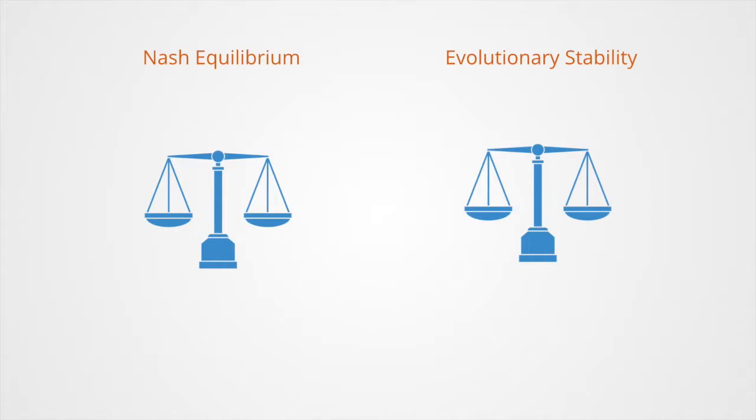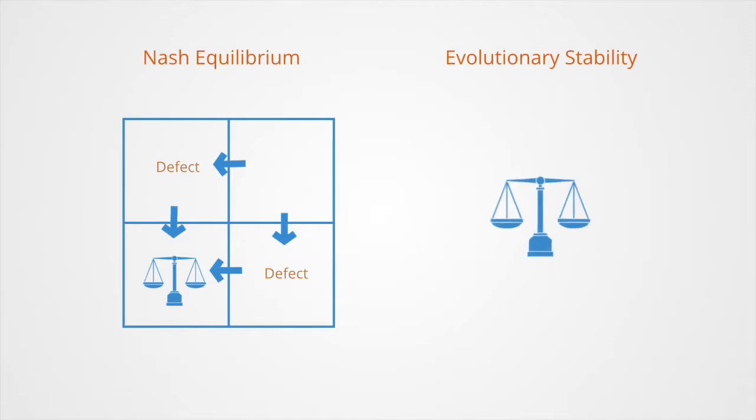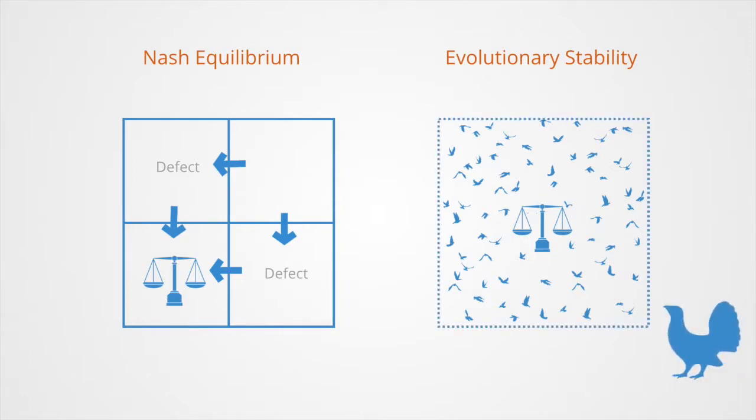The evolutionary stable strategy concept is very much similar to the Nash equilibrium within classical game theory, with a number of additions. Nash equilibrium is a game equilibrium where it is not rational for any player to deviate from their present strategy. An evolutionary stable strategy is a state of game dynamics where, in a very large population of competitors, another mutant strategy cannot successfully enter the population to disturb the existing dynamic.